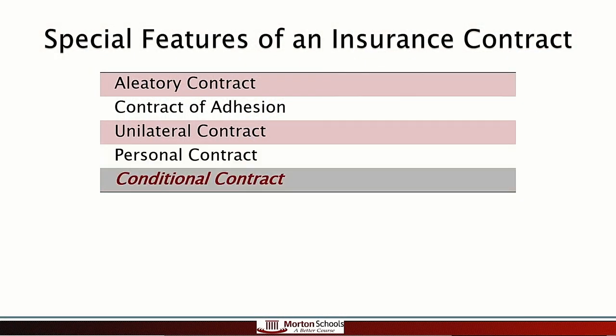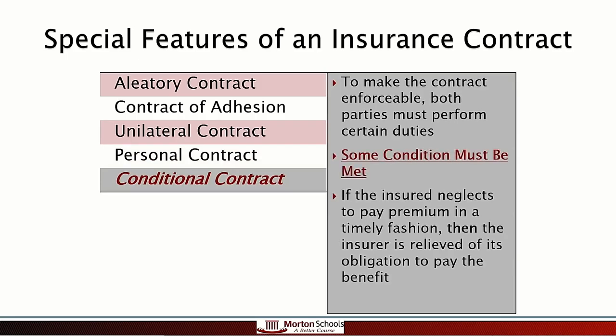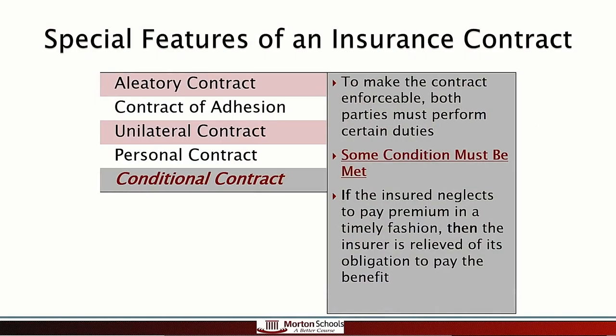The next concept is conditional. Conditional means some condition must be met — if blank, then blank — the if thing has to happen before the then thing happens. In a life insurance policy, somebody has to die before the policy pays out any money. Also in the policy: if the person doesn't pay the premium in a timely fashion, then the insurance company is relieved of its obligation to pay the benefit. Under unilateral, if you didn't pay your premium they couldn't sue you, but under conditional they can cancel or lapse the policy.